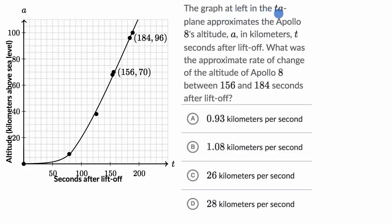We are told the graph at left in the TA plane approximates the Apollo 8's altitude A in kilometers, T seconds after liftoff. What was the approximate rate of change of the altitude of Apollo 8 between 156 and 184 seconds after liftoff? So pause this video and try to figure that out.